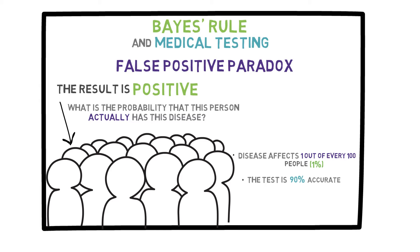This means that if a person does have the disease, then the test will come back positive with a 90% probability and comes back negative with a 10% probability. It also means that a person who does not have the disease will get a negative result with a 90% probability and will get a positive result with a 10% probability.